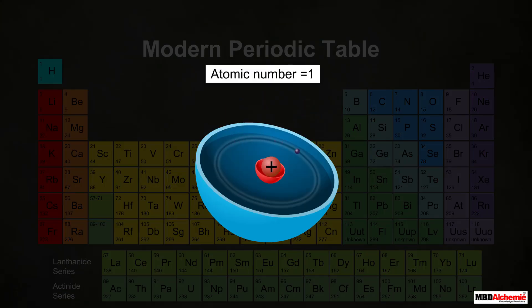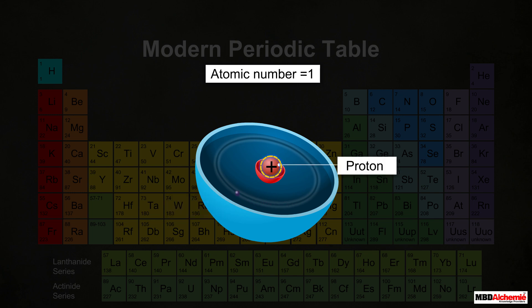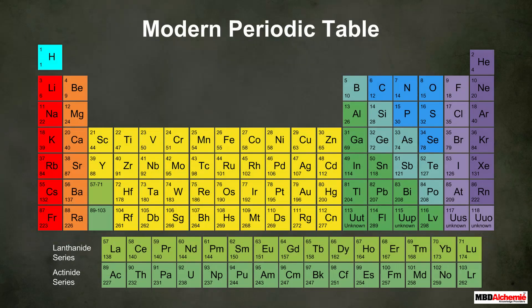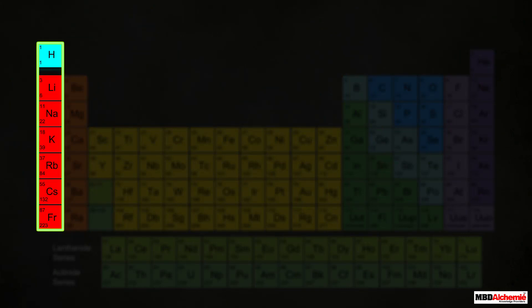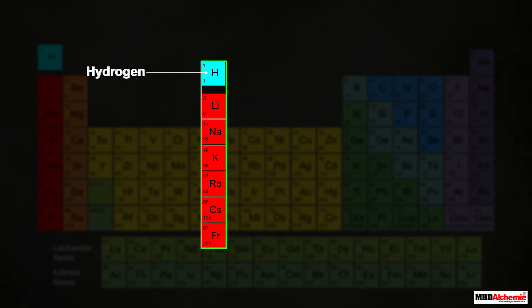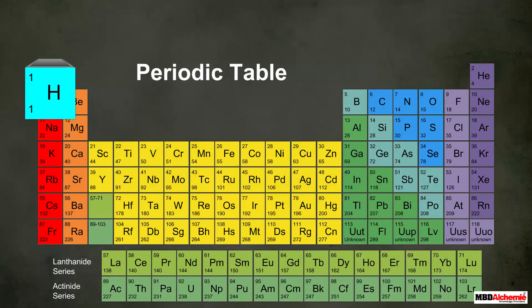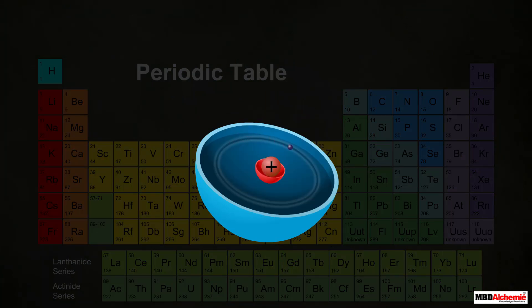The atomic number of hydrogen is 1, so it has only one electron and one proton. Its electronic configuration is written as 1s¹. This electronic configuration is similar to that of Group 1 elements, or alkali metals, whose general valence electronic configuration is also ns¹.